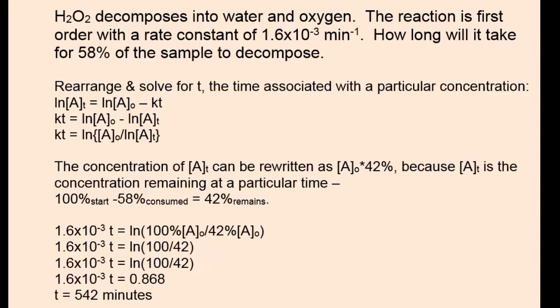When doing that, we see that we have a hundred percent over 42 percent, and the variable is the same, and that would be A0, because we have both concentrations in terms of A0. So that cancels out, leaving 100 over 42. Take the natural log of that, simplifies to 0.868, which equals the rate constant times T. Solving for T, get 542 minutes.